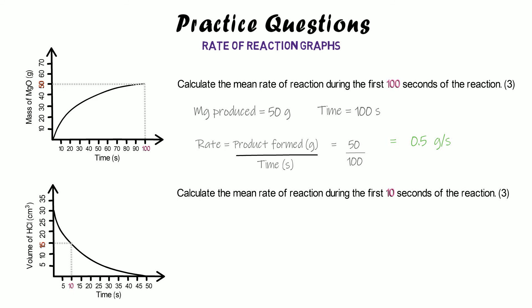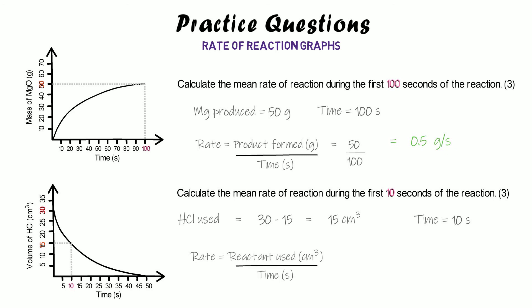For the second graph question, at 10 seconds the volume of HCl reads 15 centimetres cubed, but it started at 30, so we've used up 15 centimetres cubed. That's the tricky part — you have to calculate how much was used up. Reactant used divided by time: 15 divided by 10 equals 1.5 centimetres cubed per second. You get one mark for reading the graph correctly, one for the process, and one for the final answer.